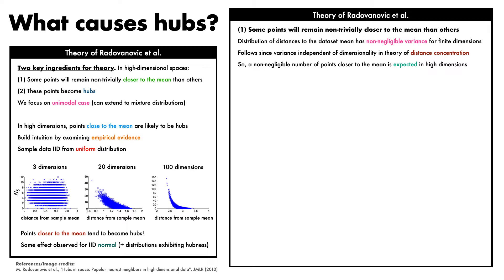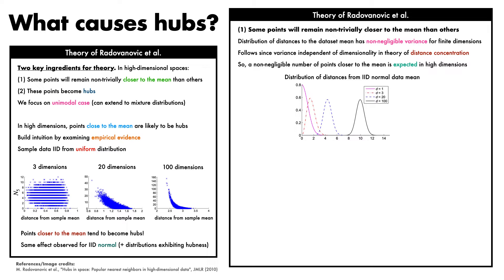To make this more concrete, we can visualize the distribution of Euclidean distances to the true data mean for IID normal data. The x-axis depicts distance from the mean of the distribution, the y-axis depicts density, and different colours indicate different dimensionalities, with increasing dimensionality curves moving from left to right. While the average distance to the mean increases with dimensionality, the variance of the distributions remains approximately constant. As a result of this variance, even as the distance concentrates, a chunk of data points will remain non-trivially closer to the mean than others.